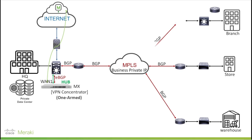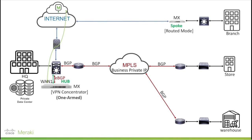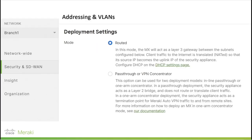After that, we will replace the router at the branch site with a Meraki MX connected to the internet and configure it as a spoke in default routed mode. Then we can establish the Auto VPN tunnel between the hub MX at HQ and have routes advertised to the branch MX as internal iBGP. Here you can see the configuration in the Meraki dashboard at the branch site — from the Addressing and VLANs tab, we can make sure the default routed mode has been selected.